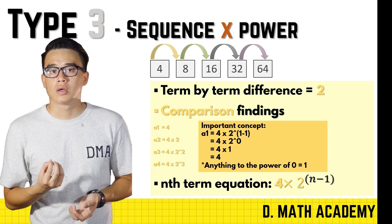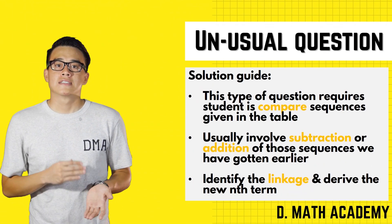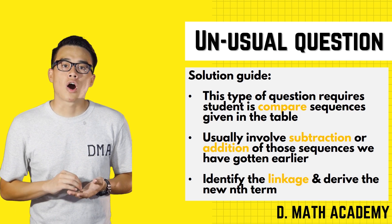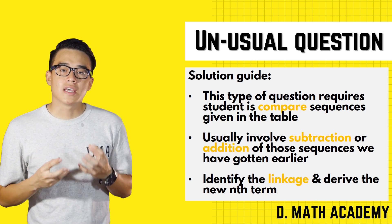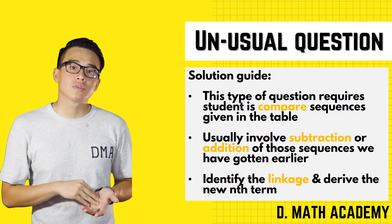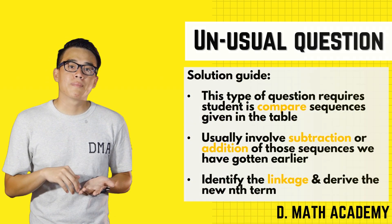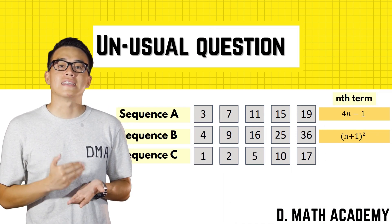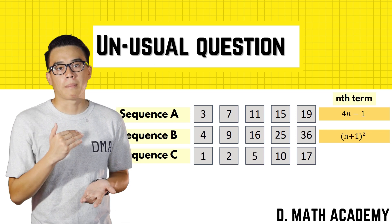For the last question type — an unusual question that lately occurs in exams — you are required to combine the n-terms you have identified and use them to construct a new n-term sequence. If you made mistakes on a previous sequence, it will have a spillover effect and cause you to lose marks here. In this example, I utilize information from Part 1: we have Sequence A, Sequence B, and Sequence C. Sequence C is the difference of B and A.